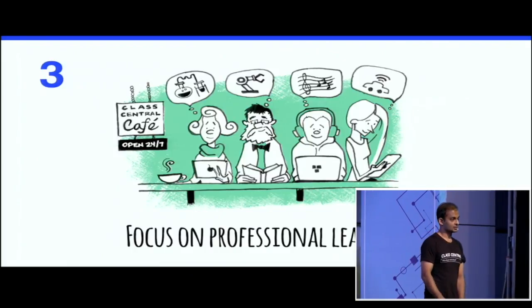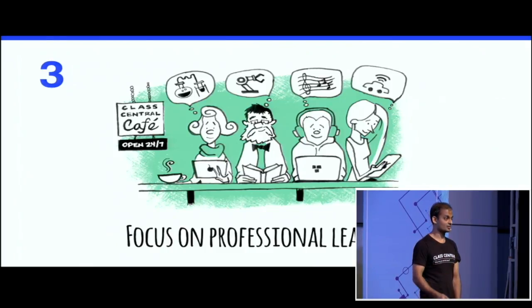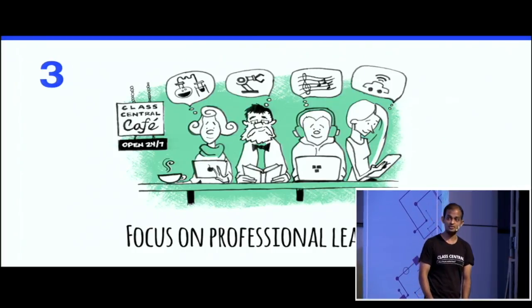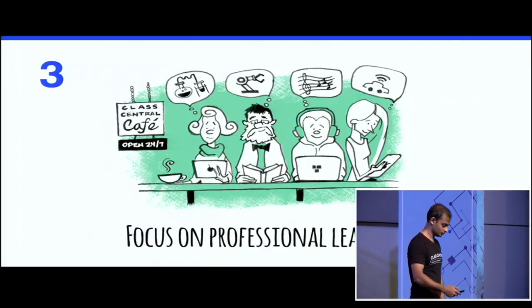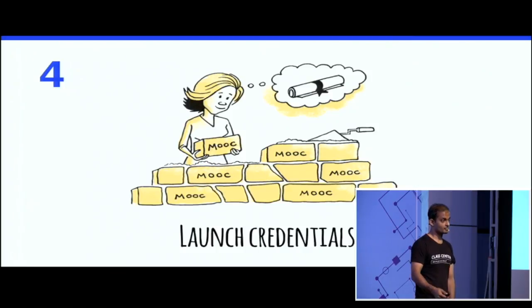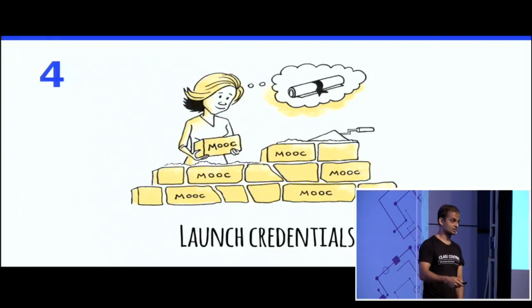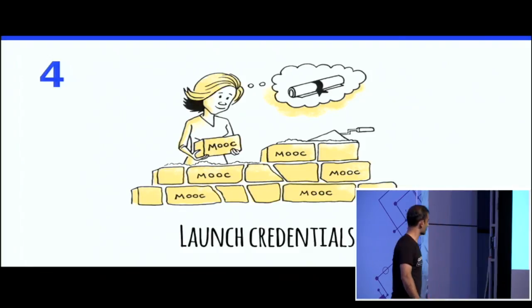The third step is focusing on professional learners. The narrative originally around MOOCs was disruption of the university. But now we know that the average age of a MOOC learner is around 29. It's not university students — it's people well beyond their university years taking these courses for professional and career growth. The fourth step is creating more credentials that learners can use to demonstrate their skills to future employers, get a promotion, or even completely switch jobs.